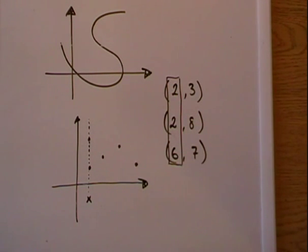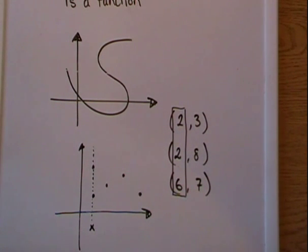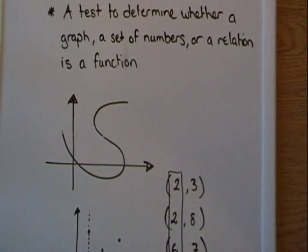So that's basically the vertical line test and the three different ways in which you might have to determine if it's a function or not through a graph, just a set of scattered points on a graph, or specific points just stated like this.